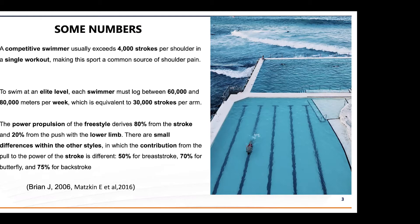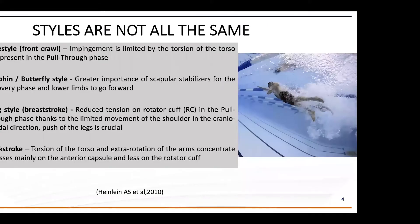The styles are not all the same. In freestyle, impingement is limited by torsion of the torso and is present in the pull-through phase. In butterfly, scapular stabilizing muscles are very important during the recovery phase. In breaststroke, tension on the rotator cuff is reduced in the pull-through phase due to limited movement in the craniocaudal direction. In backstroke, torso torsion and external rotation concentrate stress mainly on the anterior capsule rather than the rotator cuff.